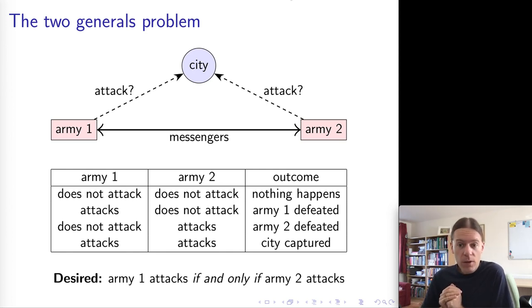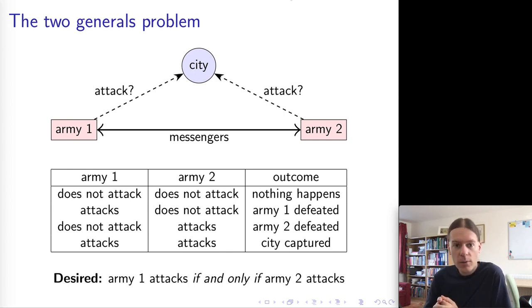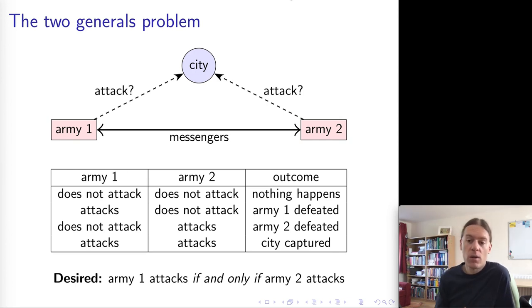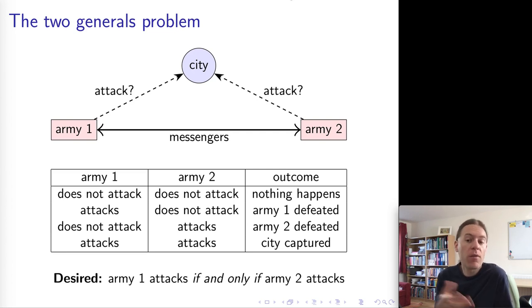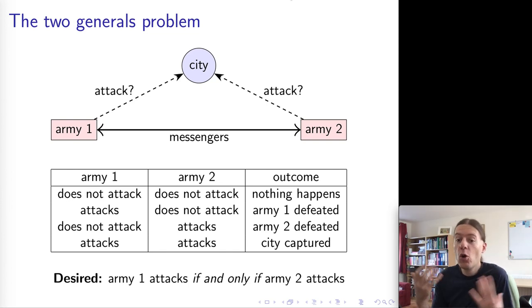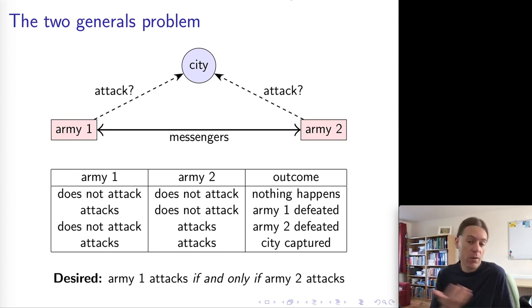What makes this difficult is that the two generals can't just talk to each other and agree on their plan of when to attack — they can only communicate via messengers. These messengers are people who run through the forest, and as they run through the forest they might get captured by forces of the city. So whenever one of the generals sends a messenger to the other, that message may or may not get through, and there's no way for the sender to know whether the message got through except by receiving a response.